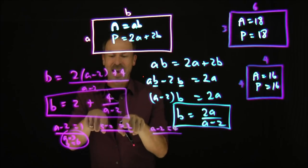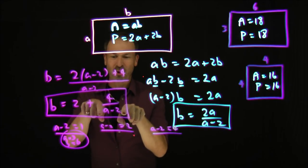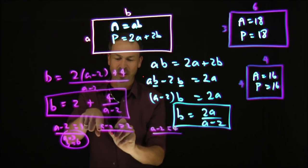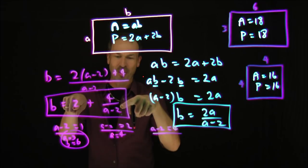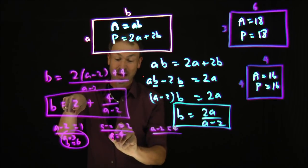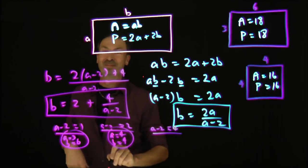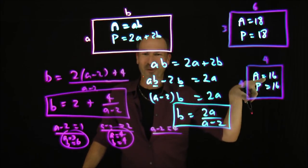All right. Other case. A minus two is two. So if A minus two is two, that tells me that A is four. And B would be two plus four over two, which is another two. So B would also be four. That's this example, the four by four square.